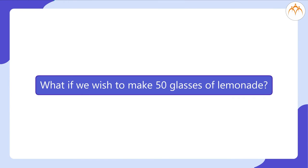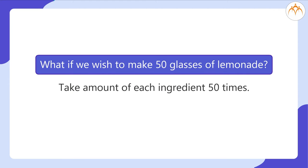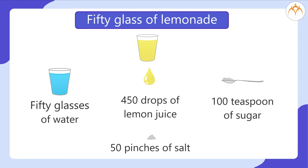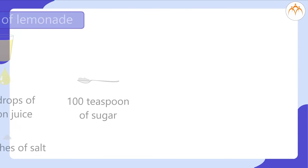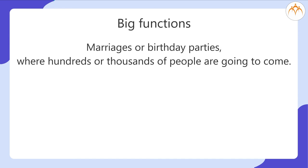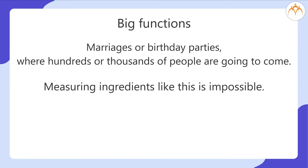What if we wish to make 50 glasses of lemonade? Take the amount of each ingredient 50 times. But then measuring the amounts becomes tedious. For example, measuring around 450 drops of lemon juice, 100 teaspoons of sugar, or 50 pinches of salt is quite boring. For big functions like marriages or birthday parties where hundreds or thousands of people come, measuring ingredients like this is impossible.